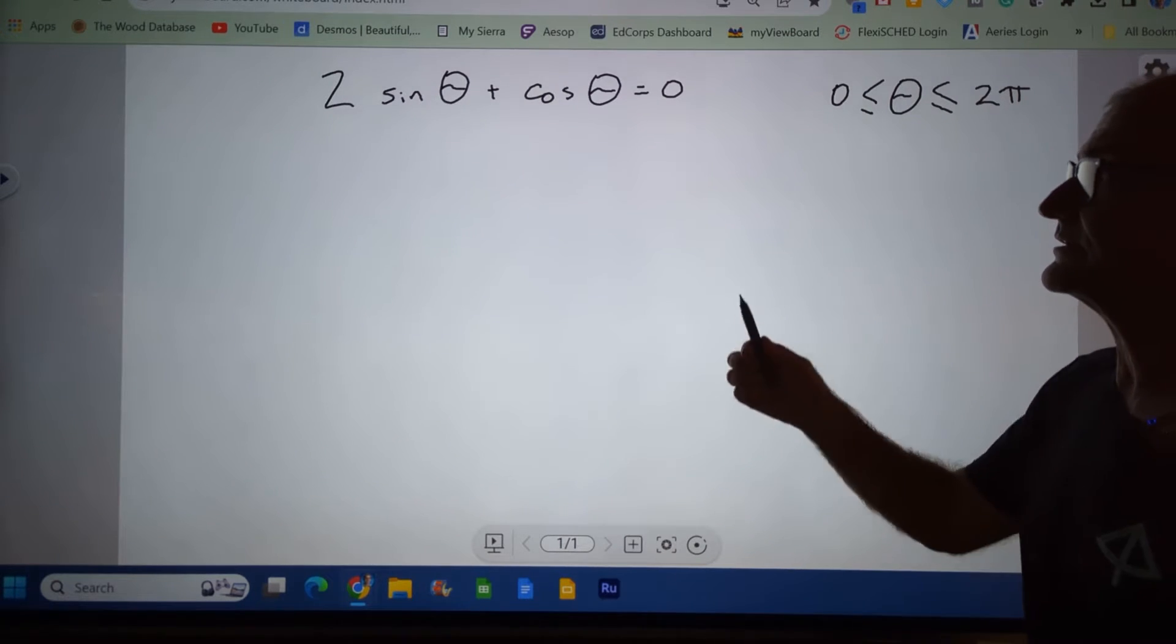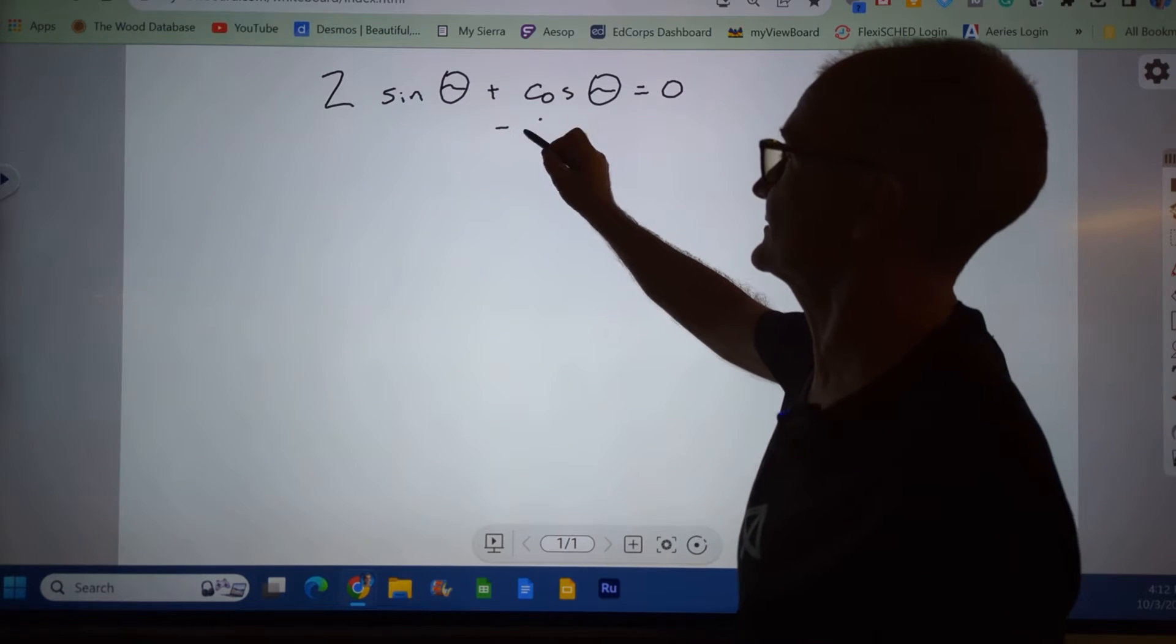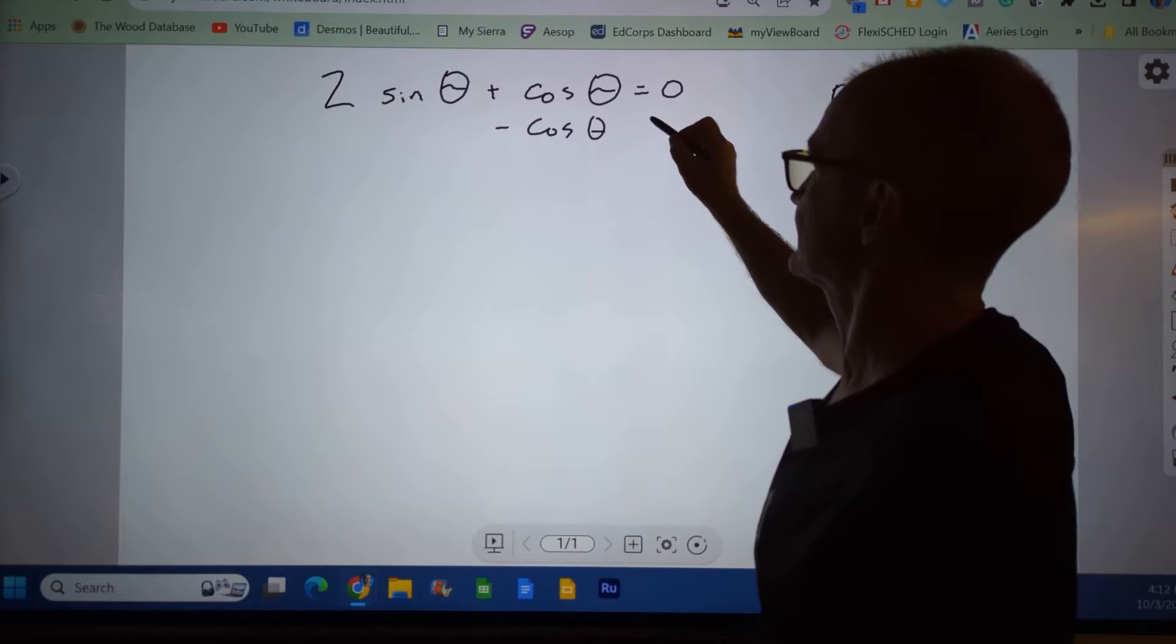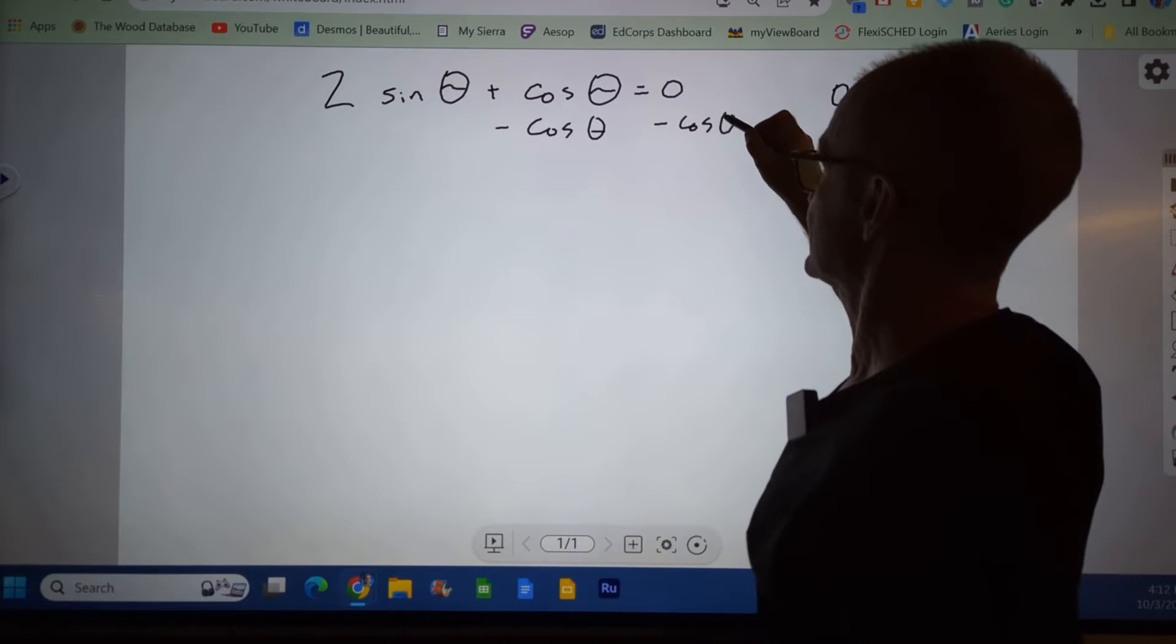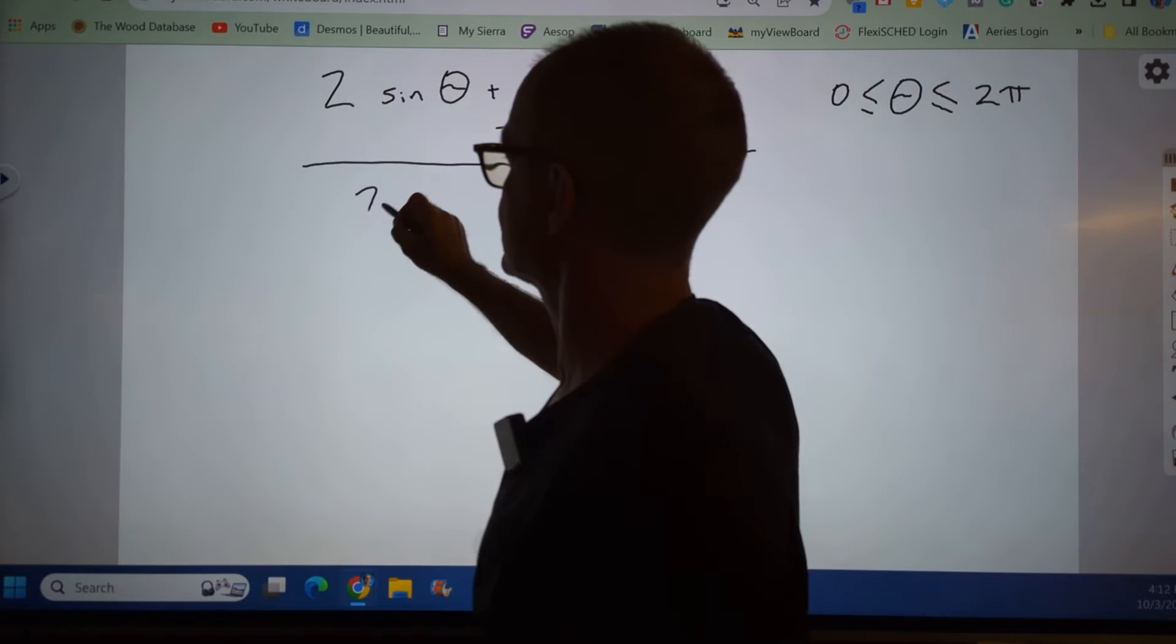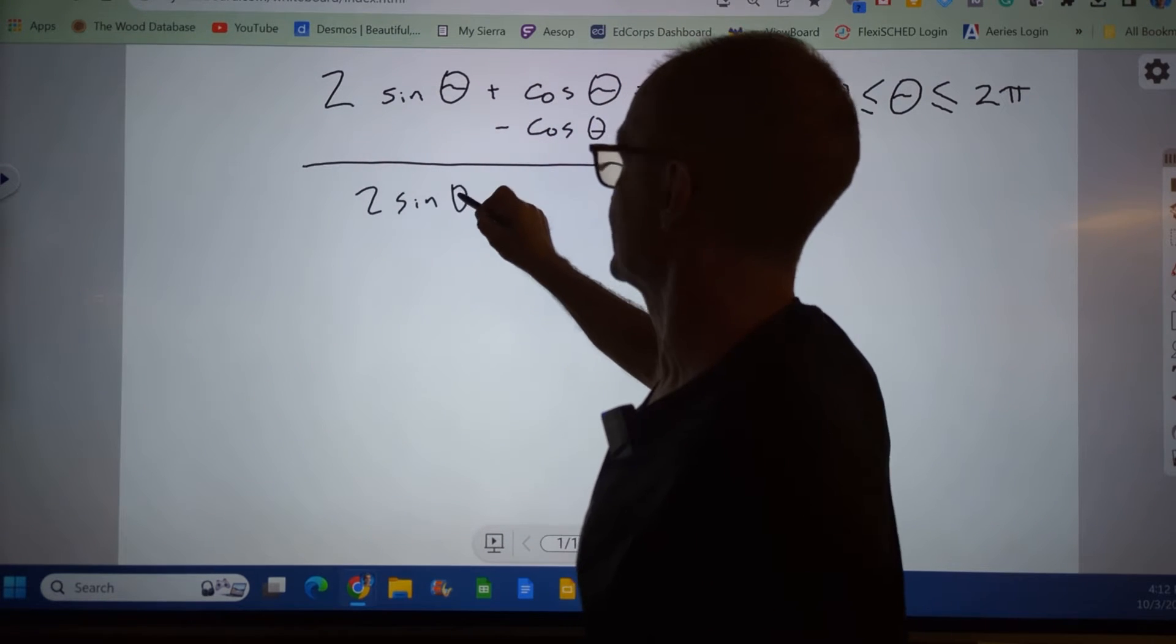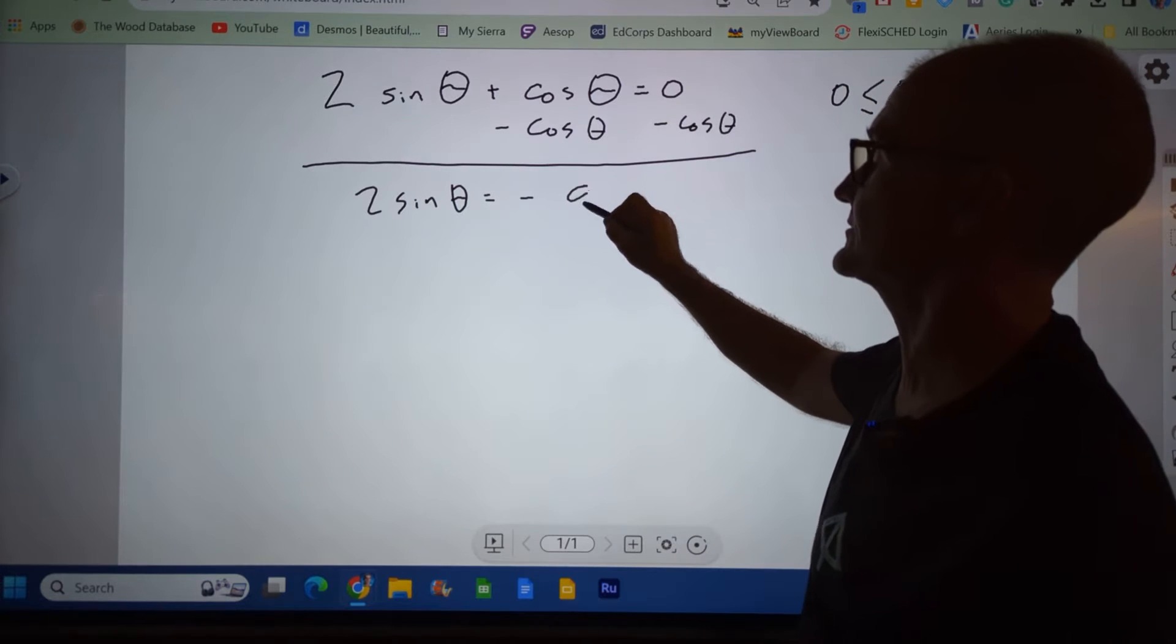Where I'm going to start is I'm going to subtract cosine of theta from both sides. And that's going to give me 2 sine of theta is equal to negative cosine of theta.